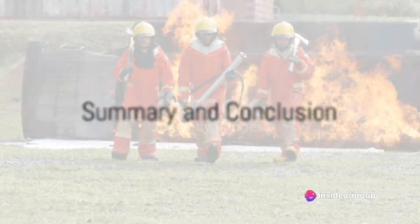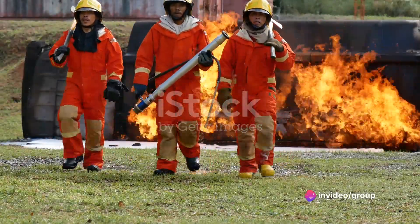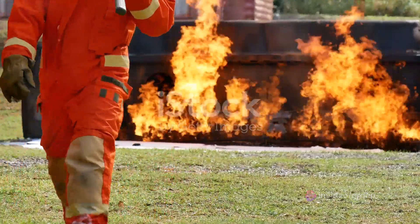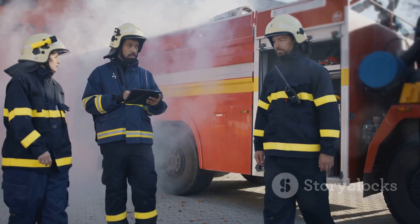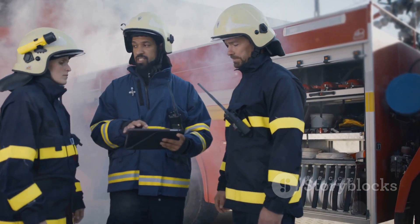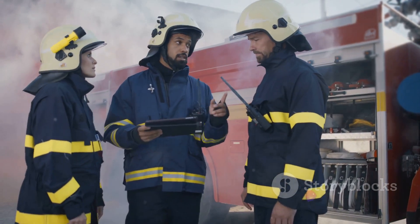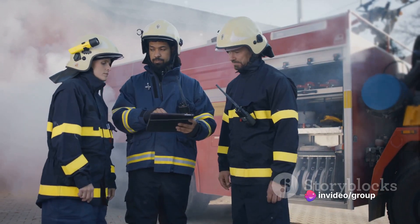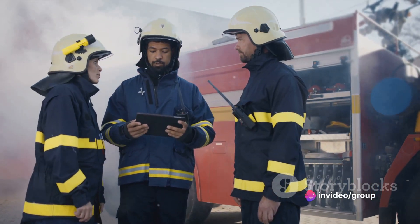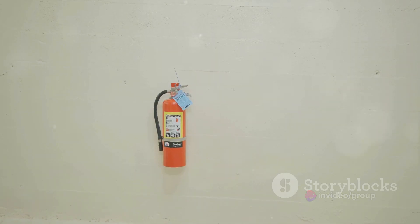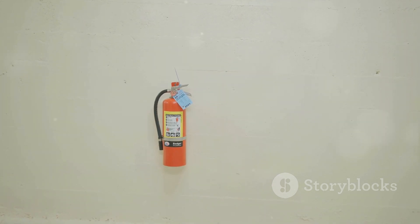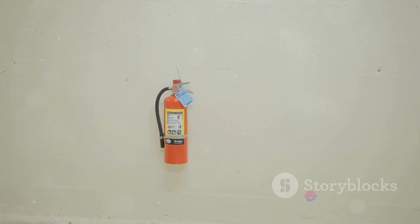In summary, understanding the different types of fires and how to extinguish them is a critical part of fire safety. Class A fires are best extinguished with water or a monoammonium phosphate fire extinguisher; class B fires with a foam fire extinguisher; class C fires with a carbon dioxide or dry chemical fire extinguisher; class D fires with a special class D fire extinguisher; and class K fires with a class K fire extinguisher.